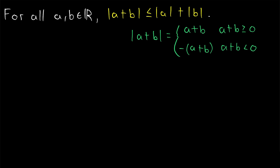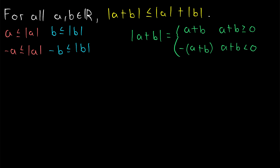We want to begin by noticing four obvious inequalities. Certainly, a is less than or equal to the absolute value of a, and negative a is less than or equal to the absolute value of a. This is because a and the absolute value of a have the same magnitude, and if a is negative, it will be less than its absolute value. Similarly, b must be less than or equal to the absolute value of b, and negative b is less than or equal to the absolute value of b. The only potential change the absolute value function might make is making the number positive, and a negative is always less than a positive.